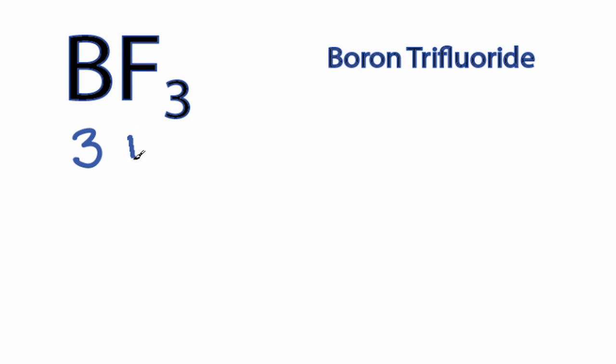Boron has three valence electrons, and fluorine has seven, but we have three fluorines, so we multiply those together, and when we add it all up, we have 24 total valence electrons for the BF3 Lewis structure.